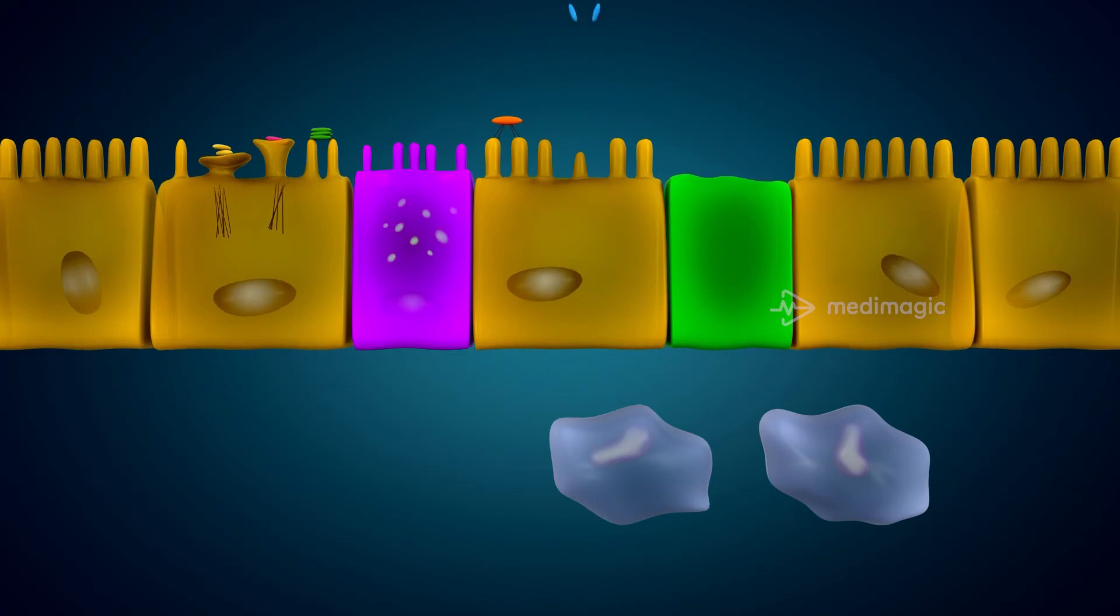Diffusely adherent E. coli or DAEC is dispersed over the surfaces of intestinal cells resulting in a diffuse adherence pattern.